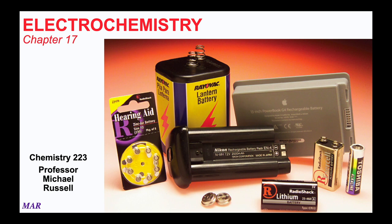Greetings, and welcome to the Chemistry 223 lecture for Chapter 17, which I have entitled Electrochemistry. We're going to look in more detail at redox reactions, where you have two chemical species — one being oxidized, losing electrons, and one being reduced, gaining electrons. There's a lot of utility for understanding redox reactions, especially in a chemical aspect. This picture shows the biggest contribution for electrochemistry: the creation of batteries.